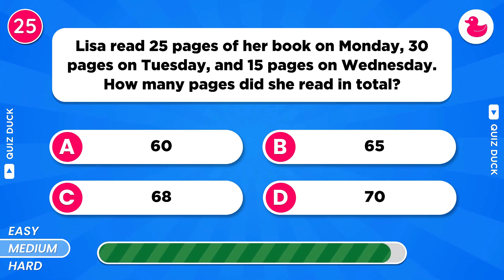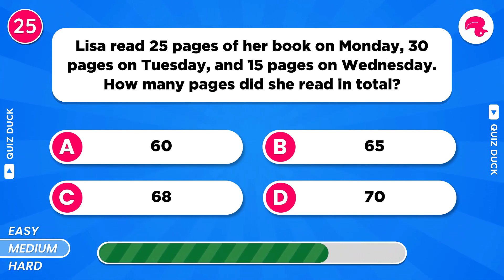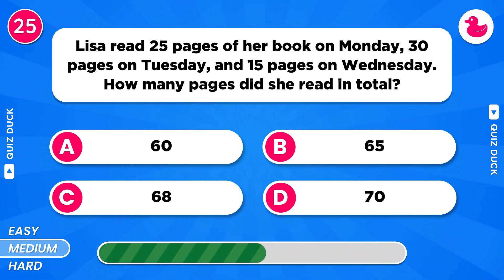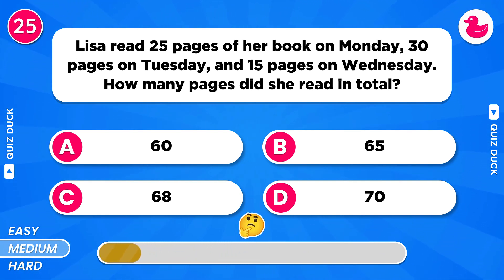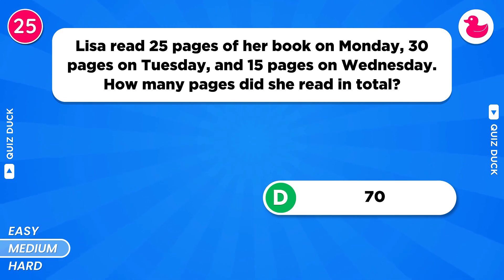Lisa read 25 pages of her book on Monday, 30 pages on Tuesday, and 15 pages on Wednesday. How many pages did she read in total? Option D, 70.